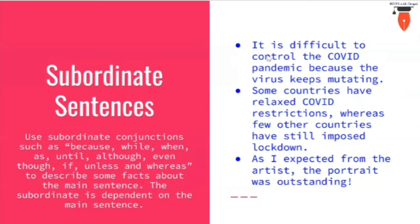Let's move to the next type, also known as subordinate sentences. We use subordinate conjunctions such as because, while, when, as, until, although, even though, if, unless, and whereas. These describe additional facts about the main sentence. The subordinate clause is dependent on the main sentence.